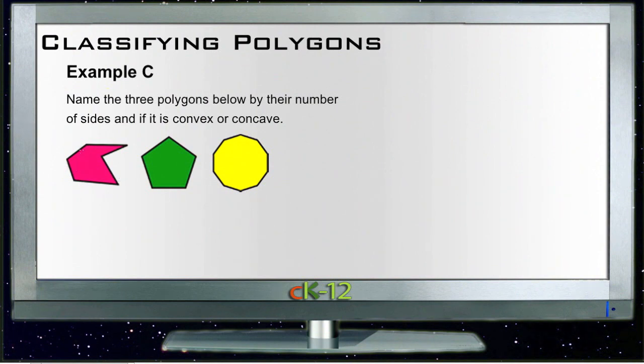So our first one here, we have one, two, three, four, five, six sides. So that tells us that one is a hexagon, six sides. And since it has this little bent in thing on the right hand side over here, this one is concave.